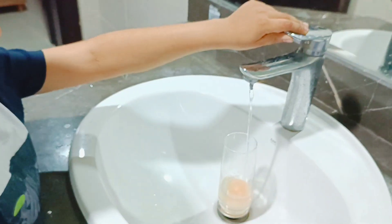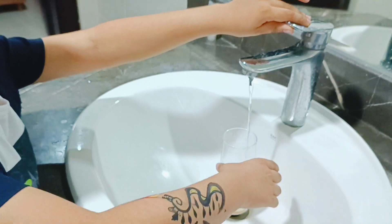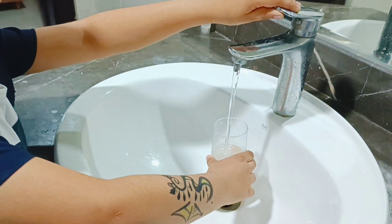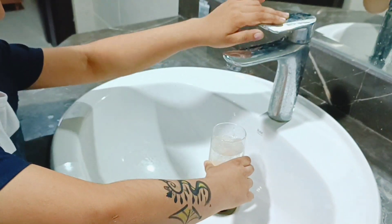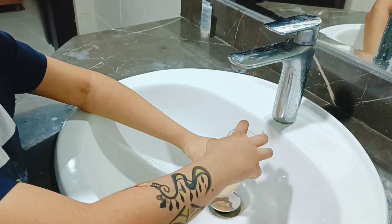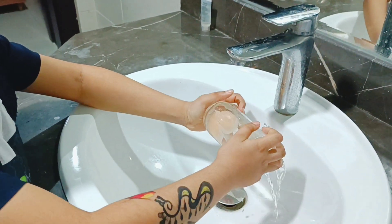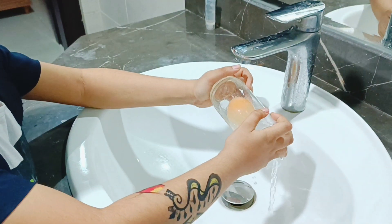Guys, after 24 hours, the egg will turn yellow and squishy. So, the final step is just to wash the egg and overflow the vinegar with water.